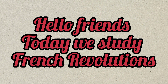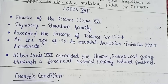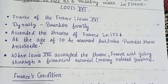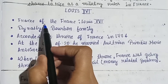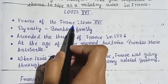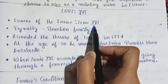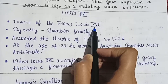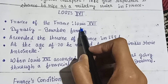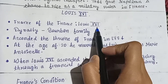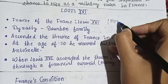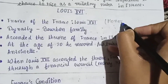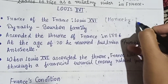Hello friends, today we study the French Revolution. Let's start. Today we learn the chapter on the French Revolution. France had Louis XVI as king — monarchy means king.